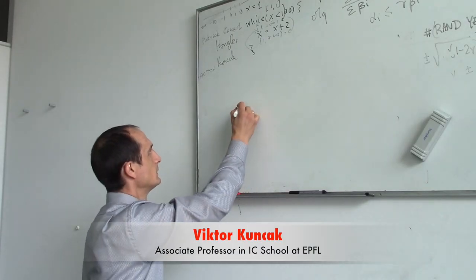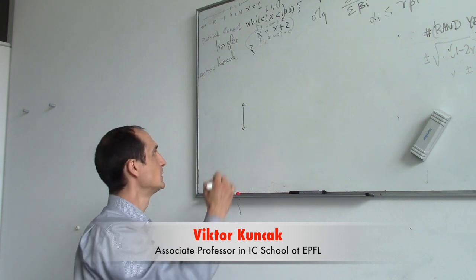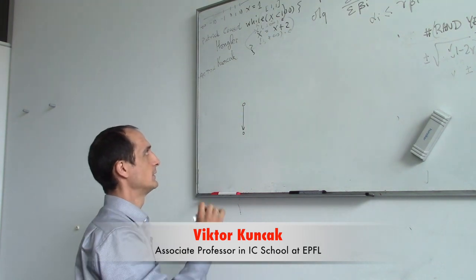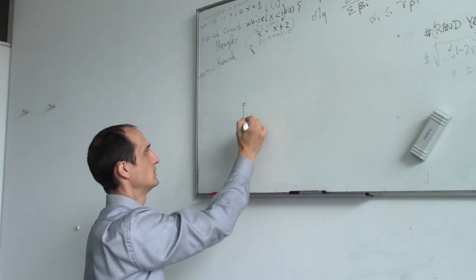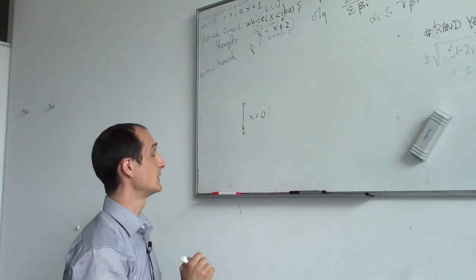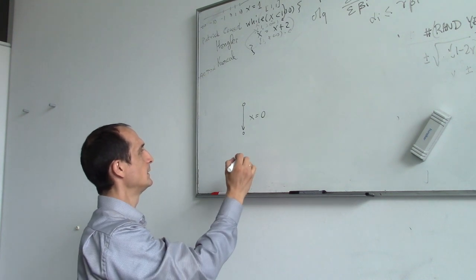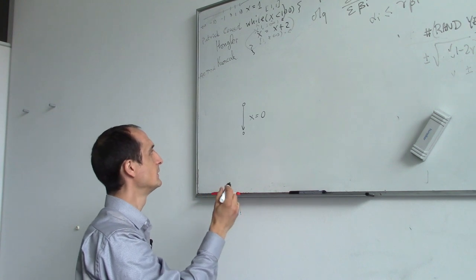If you have a simple program, you can often represent it using something like a flow chart, where you have nodes that correspond to positions in the program and then on the edges you have some statements. For example, this statement would initialize variable x to 0. And then if you have a loop that would be represented as a cycle in this flowchart.